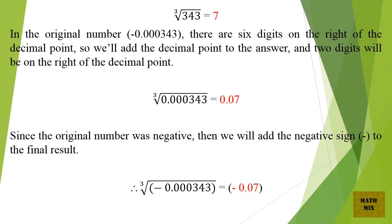The cube root of 343 equals 7. In the original number, minus 0.0000343, there are 6 digits on the right of the decimal point, so we'll add the decimal point to the answer, and 2 digits will be on the right of the decimal point. The cube root of 0.0000343 equals 0.07. Since the original number was negative, we add the negative sign to the final result. Therefore, the cube root of minus 0.0000343 equals minus 0.07.